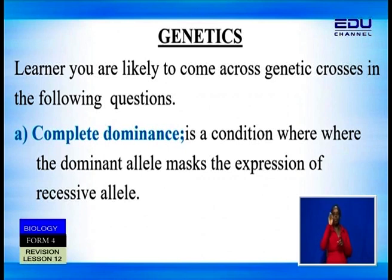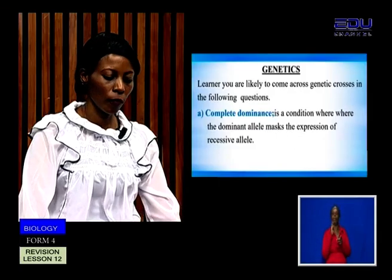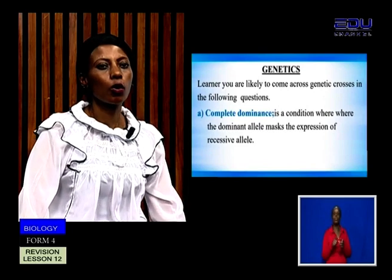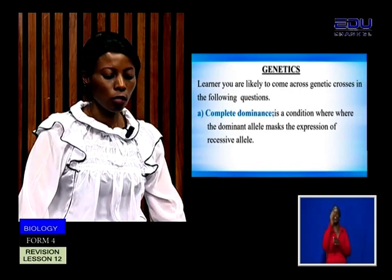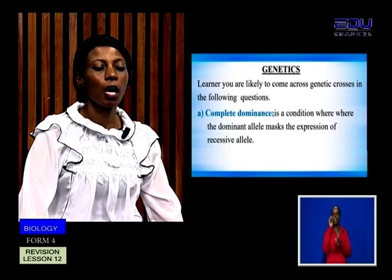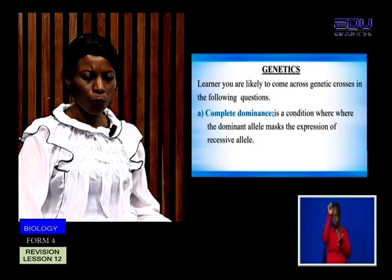Our first term is complete dominance. This is a condition where the dominant allele masks the expression of a recessive allele. An example of this is a tall pea plant crossed with a dwarf pea plant, where tallness is dominant over dwarfness. All the offspring in the first filial generation will be tall — the dominant allele has masked the expression of the recessive allele.